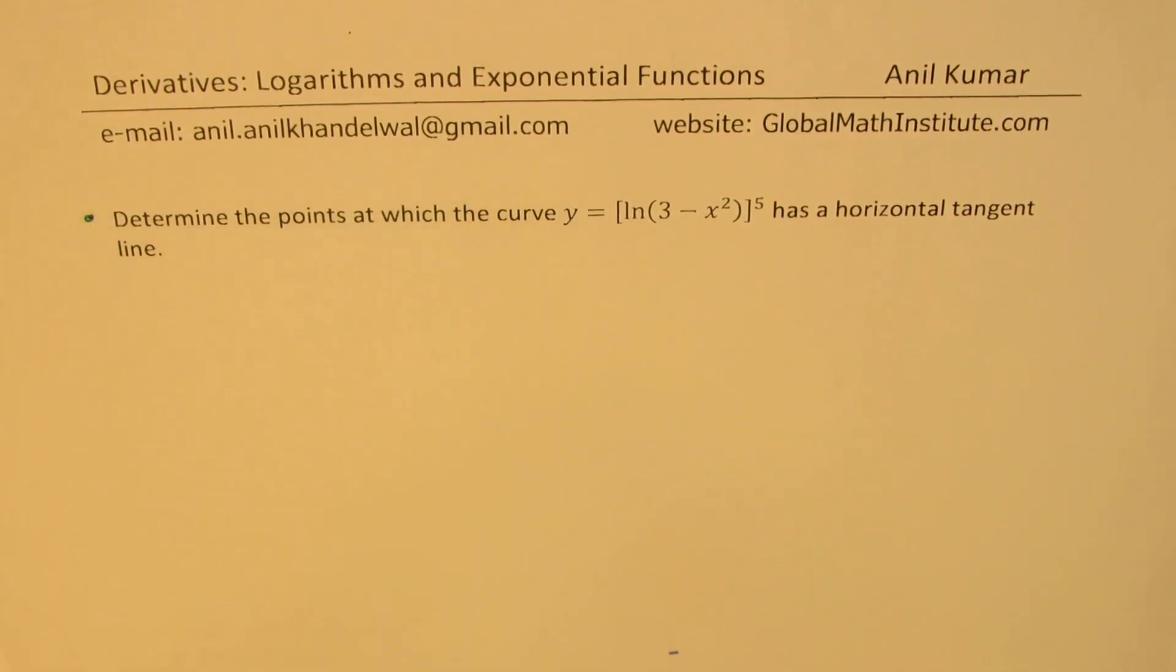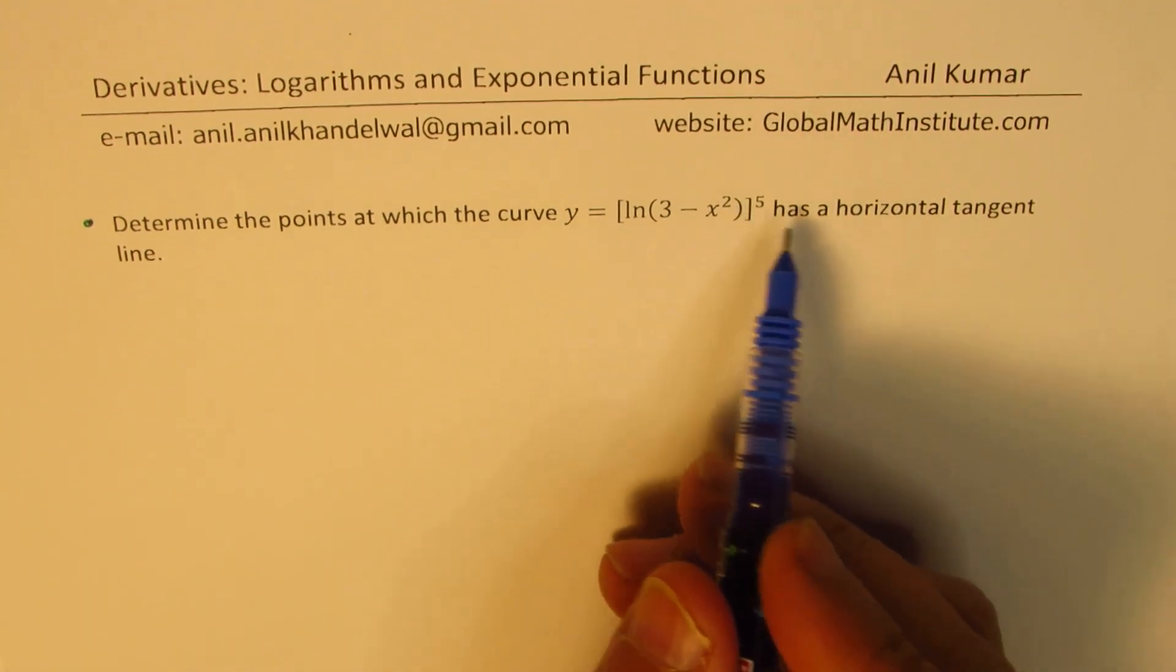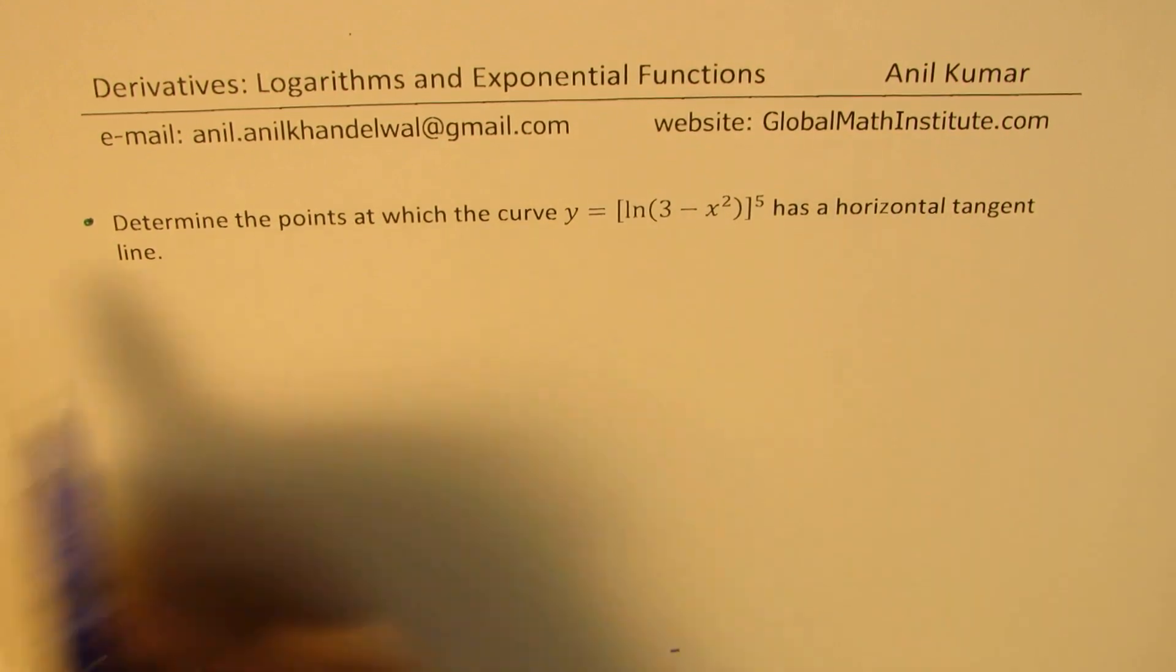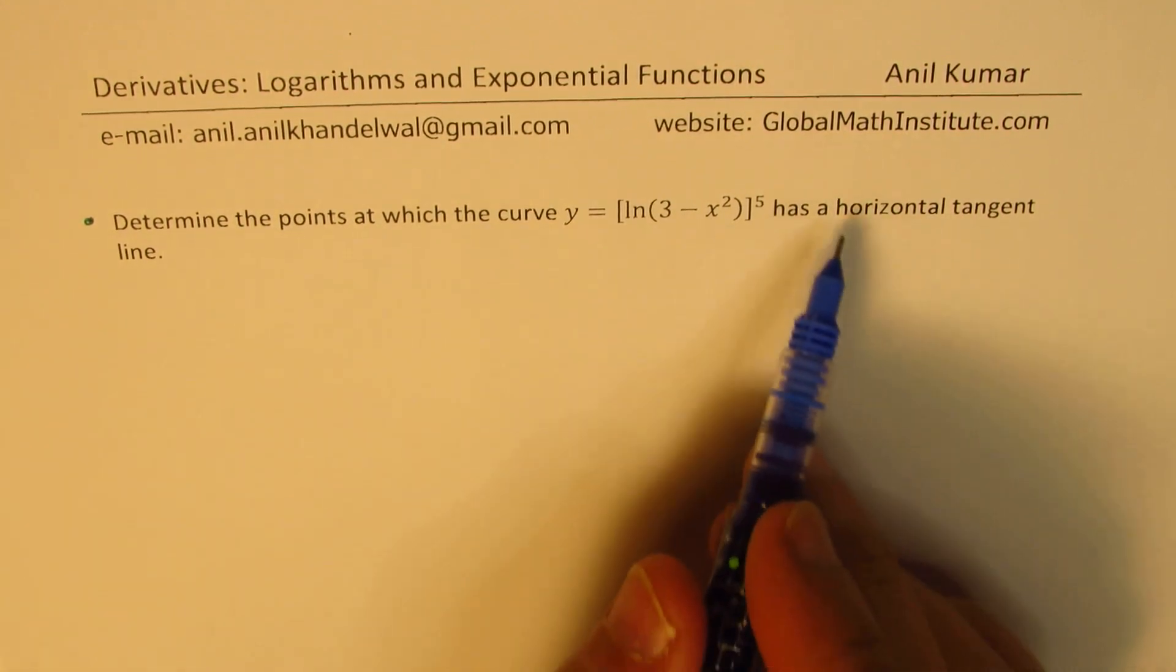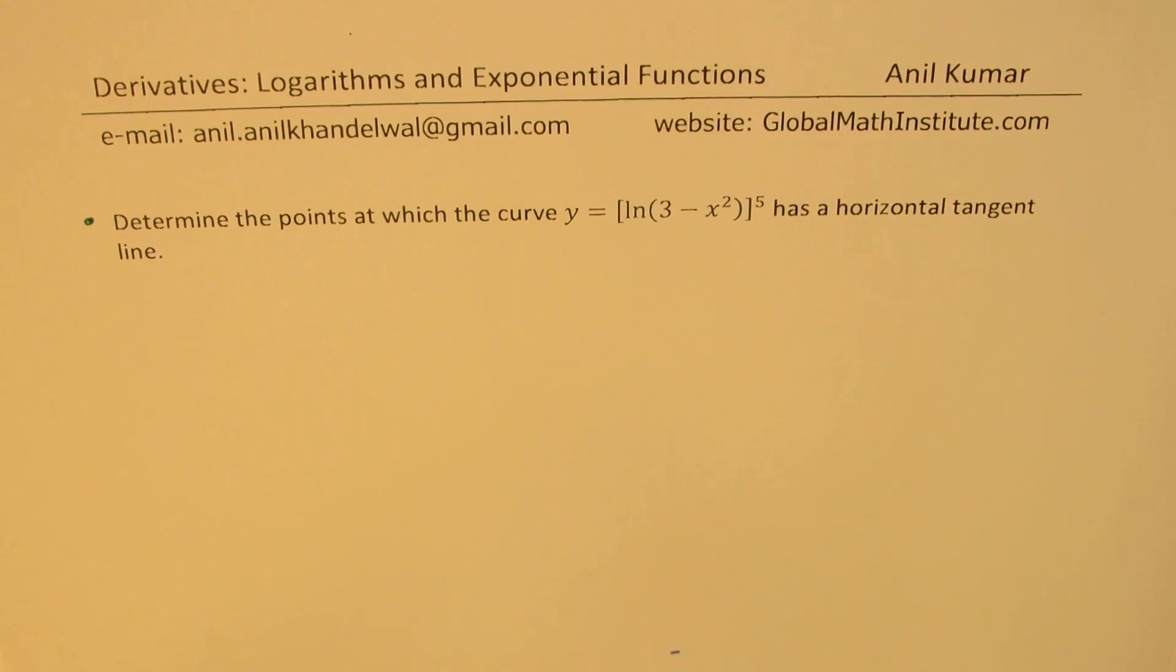Here we have an excellent question from a previous test paper. Determine the points at which the curve y equals ln of 3 minus x squared, everything to the power of 5, has a horizontal tangent line. A horizontal tangent line means the slope, the first derivative, should be zero.